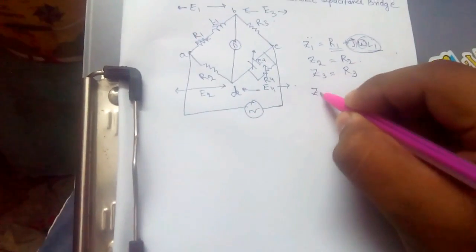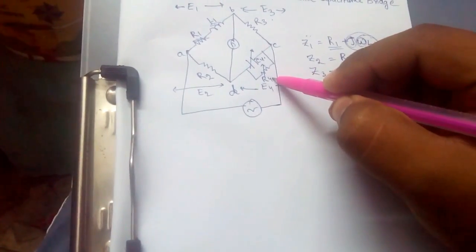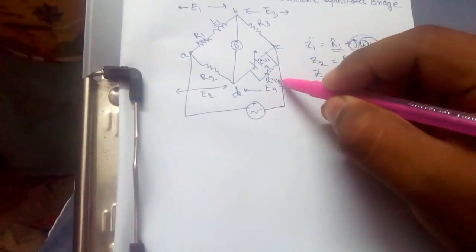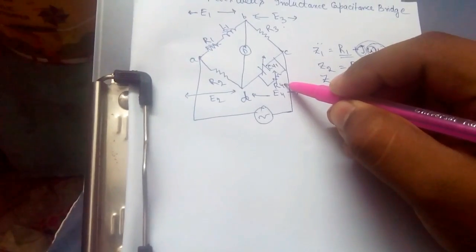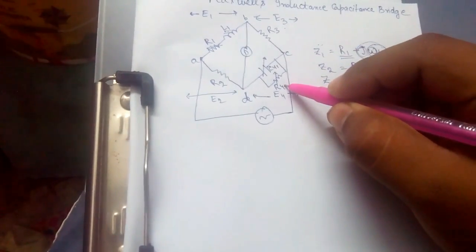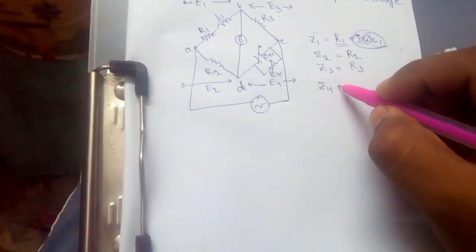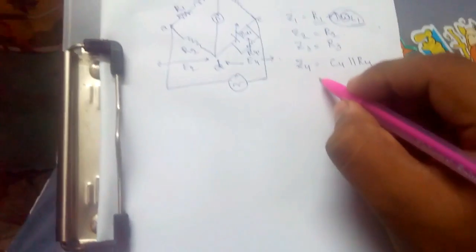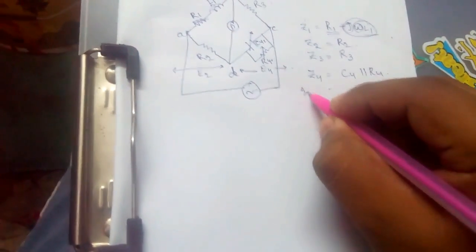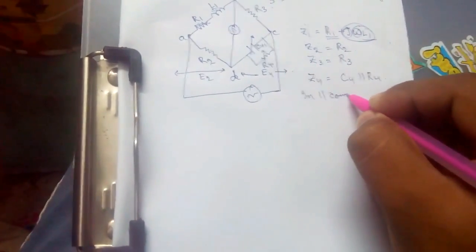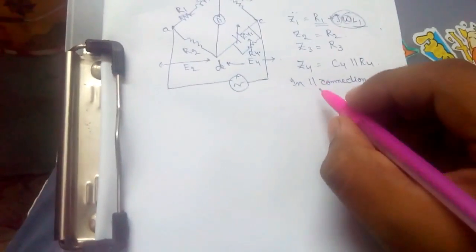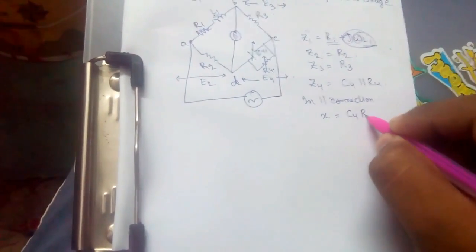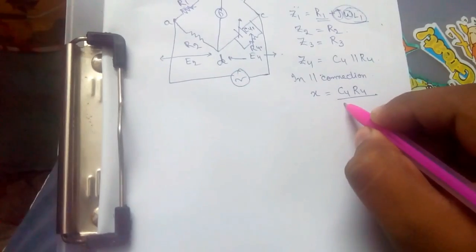Z4: As C4 and R4 are in parallel, we will find the impedance using parallel connections only. For that we will solve. We know that in parallel connection...